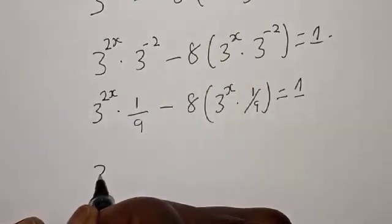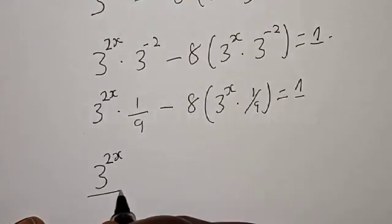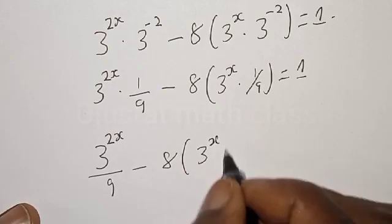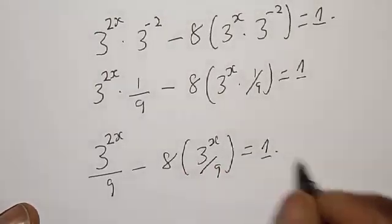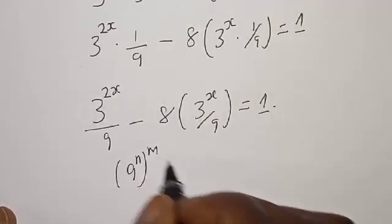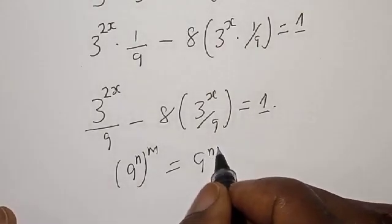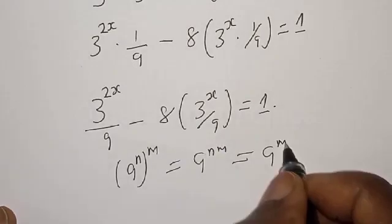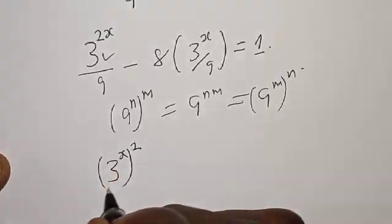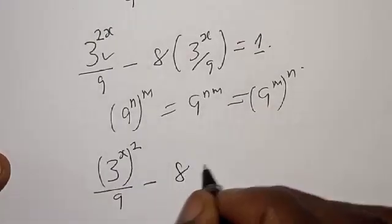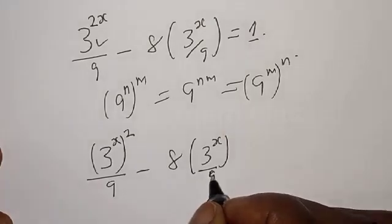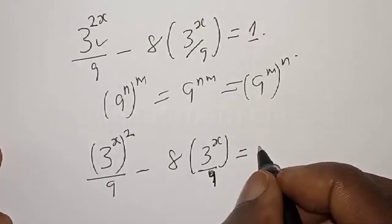Now, remember: if you have a raised to power n raised to power m, that is the same as a raised to power (n times m). We have 3 raised to the power x, all squared, divided by 9, minus 8 into 3 raised to the power x divided by 9, equal to 1.